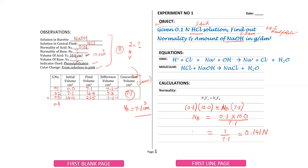So what is the normality of your base? This is a simple calculation. The formula is NA × VA = NB × VB, where NA is acid normality, VA is acid volume, NB is base normality, and VB is base volume.